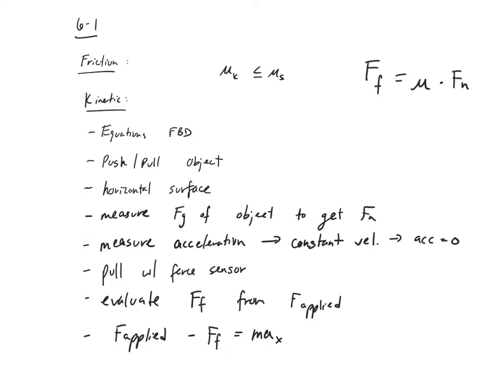After you overcome that initial stickiness, you're moving it, and you still have all these little ridges contacting each other — that's our kinetic friction. Static friction is overcoming that initial nudge to get it moving. So the two things that matter are mu and F_N. Mu is a function of two surfaces — if you didn't know that, write it down.